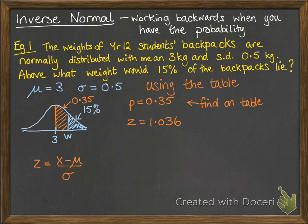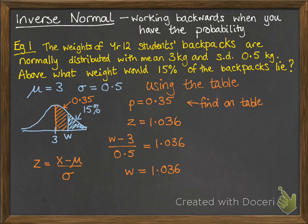Using z equals x minus mu over sigma, we substitute in. The x value we're looking for is w. So: w minus the mean (which is 3), divided by the standard deviation (0.5), equals our z value 1.036. Rearranging, w equals 1.036 times 0.5, plus 3, which gives you your answer — that's what w must be.